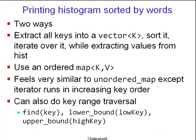But there are other ways of doing it. The other is to use an ordered map, which in C++ is simply called map. So map<K,V> behaves almost identically to unordered_map, except that when you run an iterator, it's guaranteed to give you the keys in sorted order of K. Let's see a demo of that.